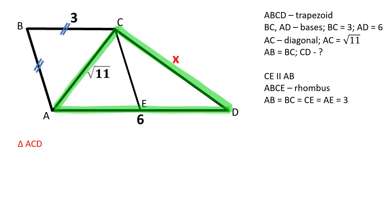Let's review the triangle ACD. Since AE is equal to 3 and AD is equal to 6, CE is a median.